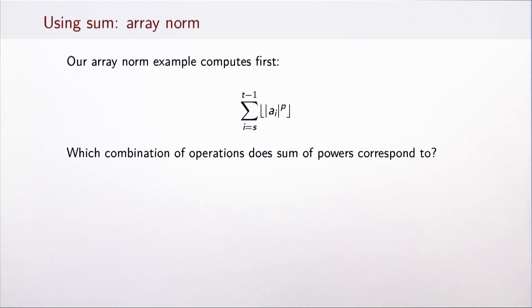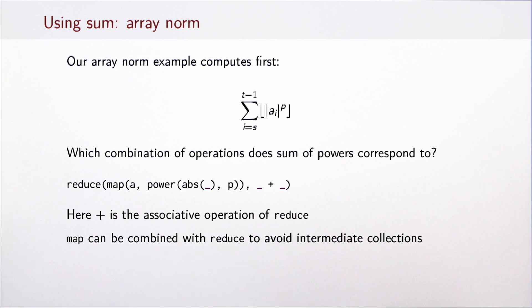As one of our first examples, we have used array norm that computes the sum of array elements raised to the power p. Which combination of operations does this expression correspond to now that we have seen operations such as map and reduce? We can express the value of the above expression as taking the array a, then doing map on this array with the operation that takes absolute value and then raises it to power p. This conceptually gives a new array and then we sum up the elements of the array. Summing up the elements of the array can be done by doing reduce with the plus operation. This is justified because plus is in fact associative.